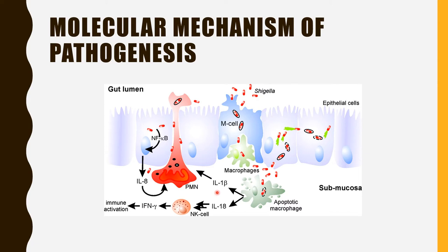The interleukin-1-beta will cause activation of polymorphoneutrophils, which also help in the killing of the Shigella bacilli. The Shigella bacilli will cause damage to the lamina propria, where there are actin filaments. They will use these actin filaments as their tail, using that energy to get into the adjacent cell and cause infection throughout the epithelial cells.